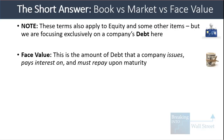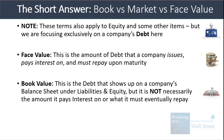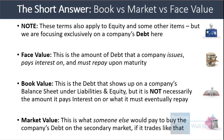Face value is the amount of debt that a company issues, pays interest on, and then must repay upon maturity. Book value is the debt that shows up on a company's balance sheet under liabilities, but it is not necessarily the amount the company pays interest on or must eventually repay. Market value is what someone else would pay to buy the company's debt on the secondary market, if it trades there.